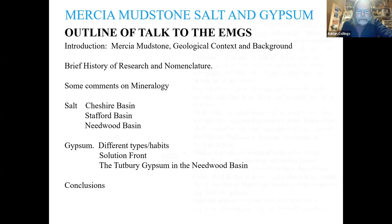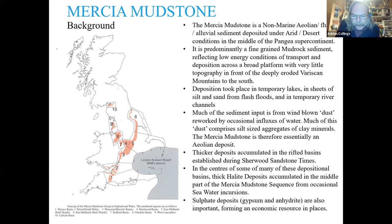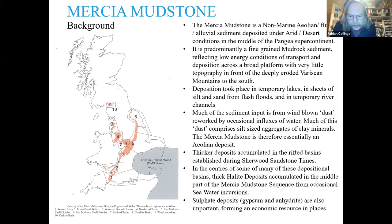The Mercia Mudstone is a non-marine aeolian, fluvial, and alluvial sediment deposited under arid and desert conditions in the middle of the Pangea supercontinent. It is predominantly a fine-grained mudrock sediment reflecting low-energy conditions of transport and deposition across a broad platform with very little topography in front of the deeply eroded Variscan mountains to the south. Deposition took place in temporary lakes, in sheets of silt and sand from flash floods, and in temporary river channels. Much of the sediment input is from wind-blown dust reworked by occasional influxes of water, comprising silt-sized aggregates of clay minerals — therefore the Mercia Mudstone is essentially an aeolian deposit.